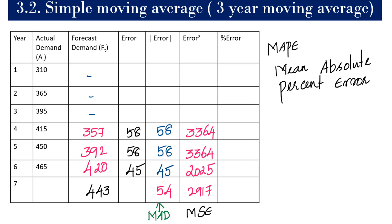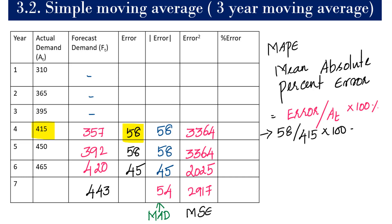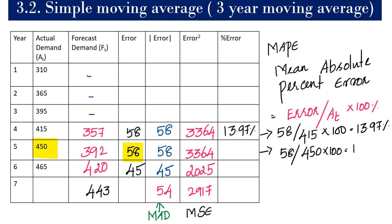MAPE, or Mean Absolute Percentage Error, is calculated as (error divided by actual demand) multiplied by 100. For year 4: 58 divided by 415 times 100 gives 13.97%. For year 5: 58 divided by 450 times 100 gives 12.88%. For year 6: 45 divided by 465 gives 9.67%.